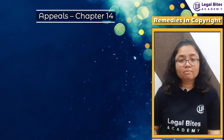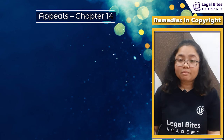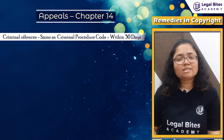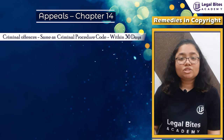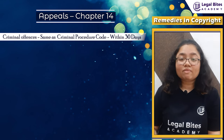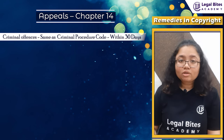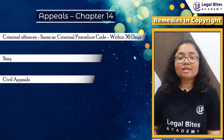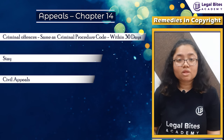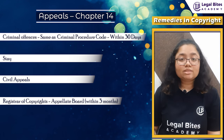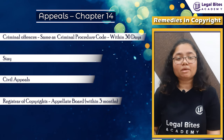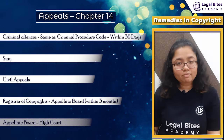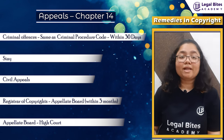Chapter 14 of the Act provides for appeals. In case of criminal offences, the appeal procedure is the same as that of other criminal offences under the Criminal Procedure Code, to be made within 30 days under section 71 of the Act. The appellate court can be prayed to stay execution of the order. For civil appeals, the hierarchy is as follows: against the order of the Registrar of Copyrights, the appeal lies to the appellate board within 3 months; against the order of the appellate board, the appeal lies to the High Court where the appellant resides.